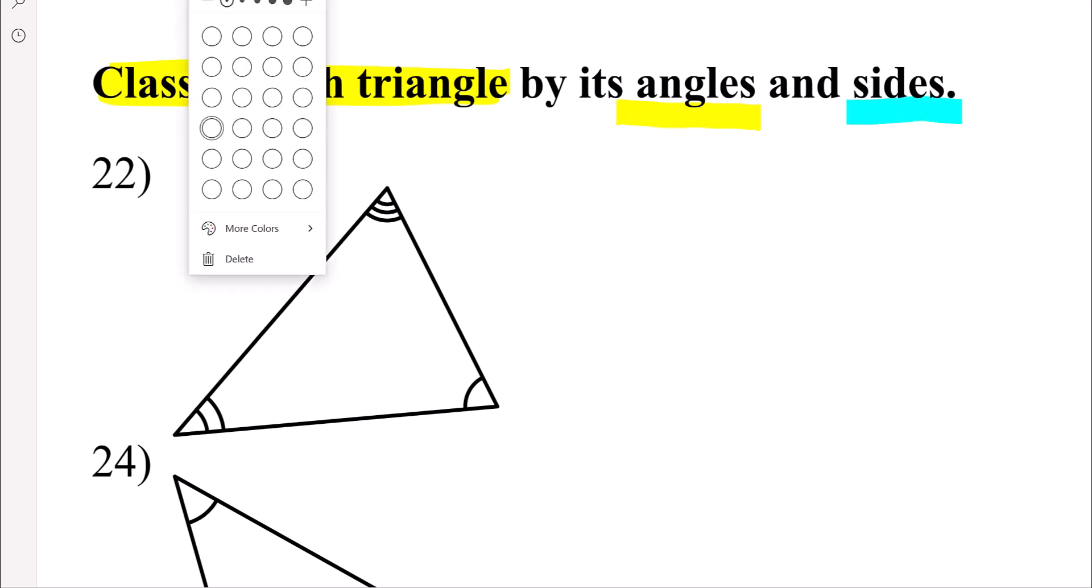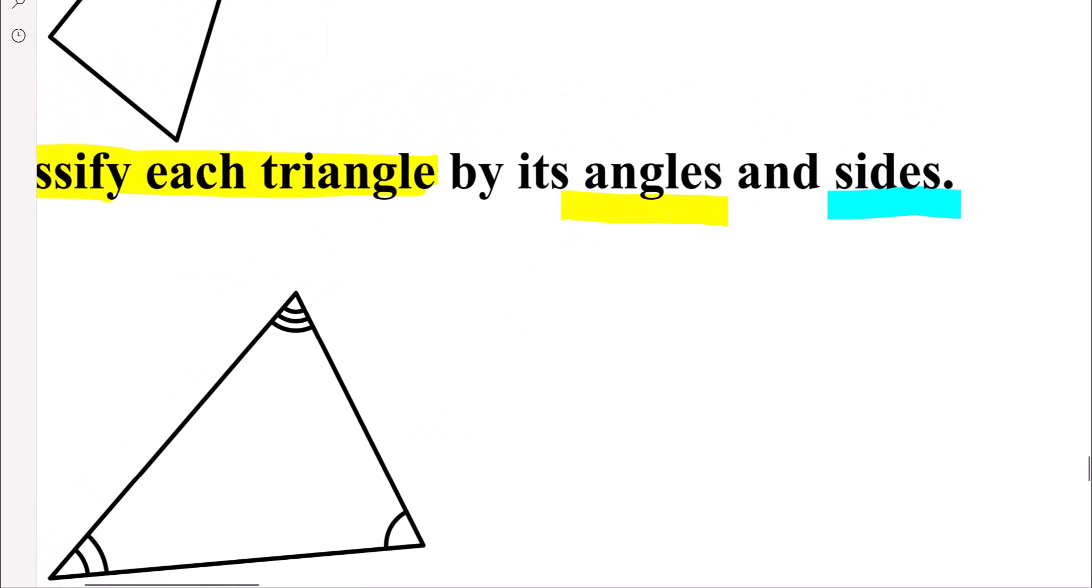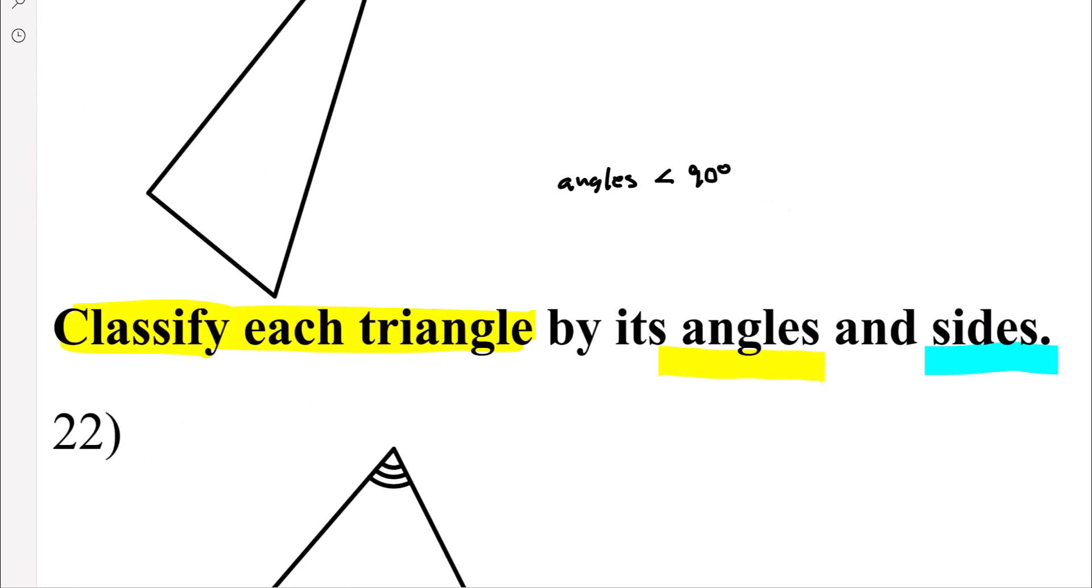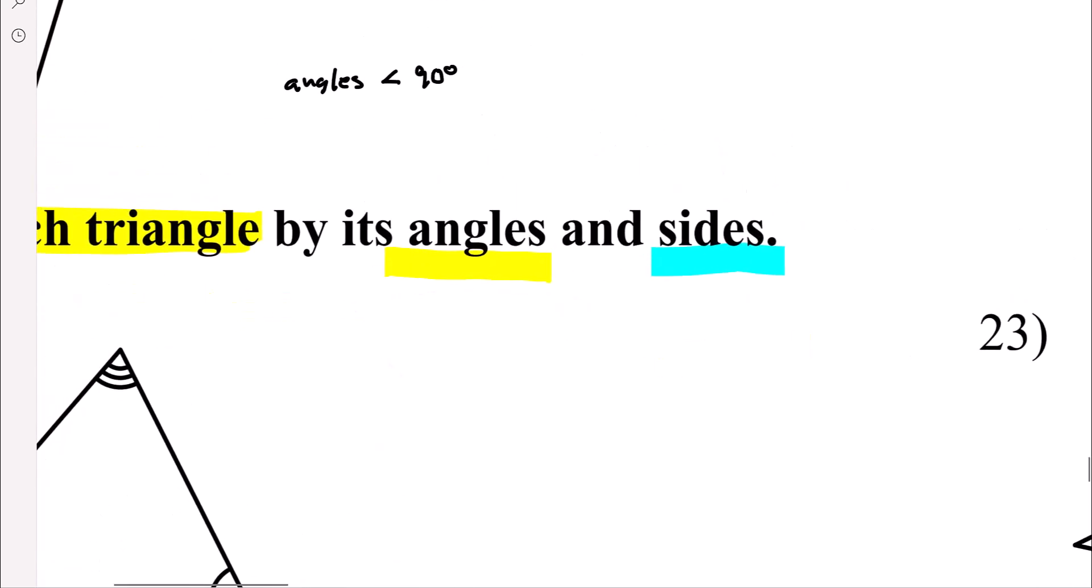So for triangles, there are three types of angles. I'm going to draw an angle. Angle that is less than 90 degrees. So one of the things I tell kids, it's little, it's acute. Little angles are cute. So these are acute angles. And that's kind of a silly way, but it might help you remember.